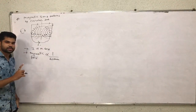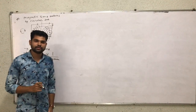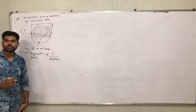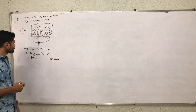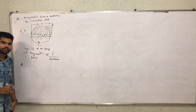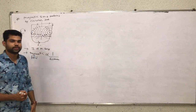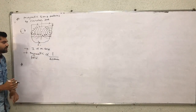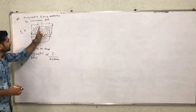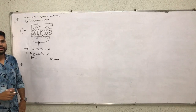So we understand: first, magnetic field produces in a straight conducting wire. Second theory: magnetic field produces in a circular loop. Now third theory: when the magnetic field produces in a solenoid. After this experiment, in place of a circular loop, we use a solenoid.